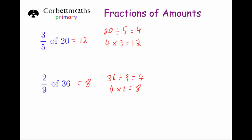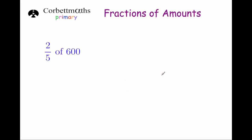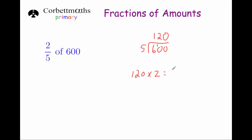To work out a fraction of a number, you just divide by the bottom and times by the top. Sometimes you might need to use the bus shelter method to do the division. Here we've got 2 fifths of 600. To get 2 fifths of something, we divide by 5 first. So 600 divided by 5 — 5 into 6 goes once, remainder 1; 5 into 10 goes twice; 5 into 0 goes 0 times. So 1 fifth of 600 is 120. But I want 2 fifths, so I'm going to times 120 by 2, and if you double 120 we get 240. So that would be 240.